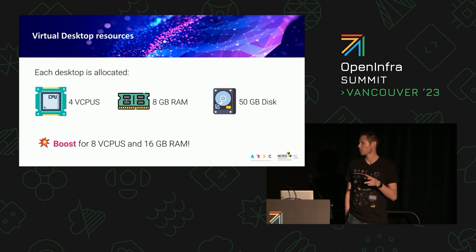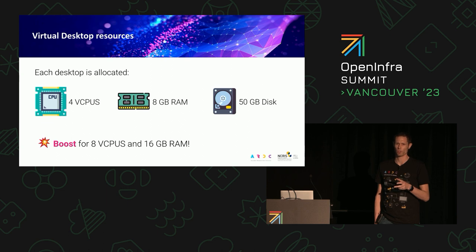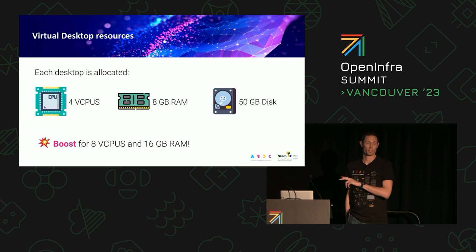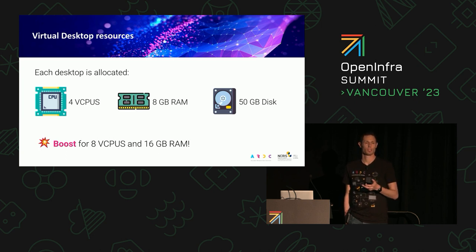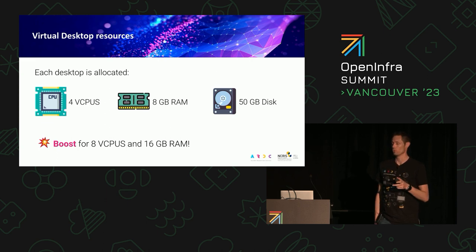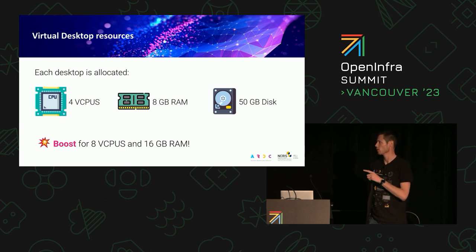When users come to our service and create a desktop, we allocate them 4 CPUs and 8GB RAM. We're quite conservative because we allow any Australian researcher to just log straight in — basically no approval process. We've tried to make the barrier to entry really low so users can get in straight away without waiting for us to gatekeep it. We give them a modest amount, but we do support a boost functionality — hit the boost button and it doubles your CPU and RAM, and that's also time-limited.